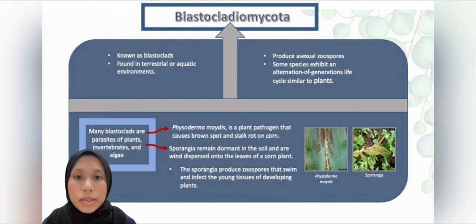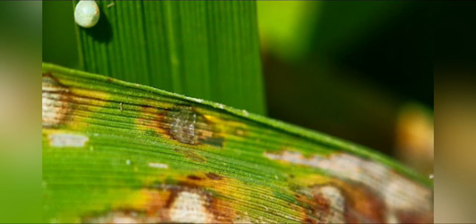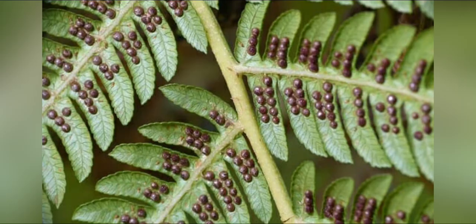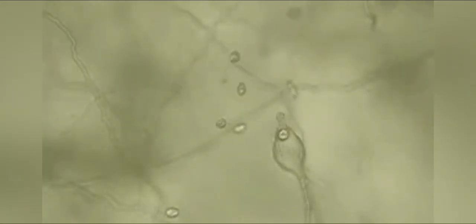Many blastoclads are parasites of plants, invertebrates, and algae. For example, Physoderma maydis is a plant pathogen that causes brown spot and stalk rot on corn. Another example is spore-producing structures called sporangia. Sporangia remain dormant in the soil and are wind dispersed onto the leaf of a corn plant. If a plant gets wet, the sporangia produce zoospores that swim and infect the young tissues of developing plants.